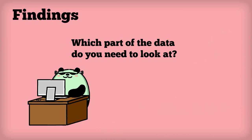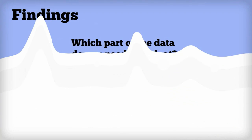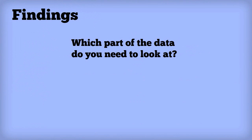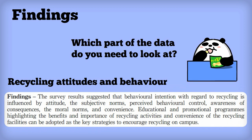First, which part of the data do we need to look at? We need to think about where the important relationships are in the data. For example, if we want to find out about recycling attitudes and behavior, we would need to look at which factors seem to affect these two things.